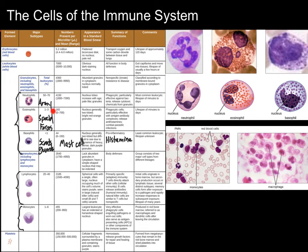That's the three granulocytes. Next we have lymphocytes, and there are three types: B cells, T cells, and natural killer cells, usually abbreviated NK cells. B cells and T cells are the cells of your acquired immune system — these are command and control. They're the big brains. Lymphocytes produce chemicals that organize and control and direct the rest of your immune system, and particularly B cells produce antibodies. Those antibodies also direct and control your immune system.